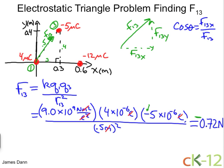If I just multiply both sides by F13, I get F13x is equal to F13, which we know is 0.72 newtons, multiplied by cos theta. We also know cos theta, because this angle here is the same as this angle there.